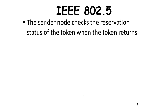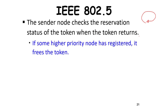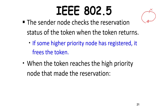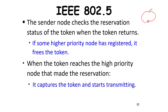When the token returns to the original sender, the sender knows which node has the highest priority message in the entire network. If its own priority ID comes back unchanged, nobody else has higher priority and it can transmit. Otherwise, it frees the token and gives it to the higher-priority node. When the token reaches the high-priority node that made the reservation, it captures the token and starts transmitting.